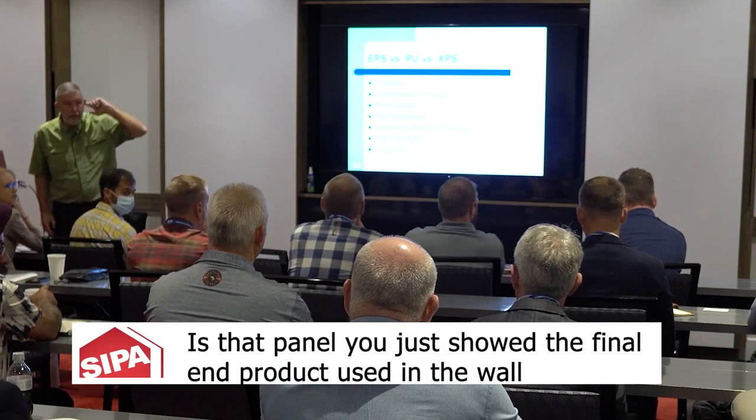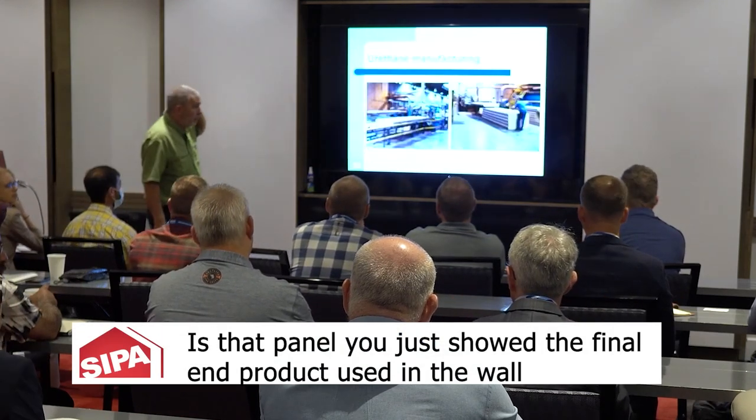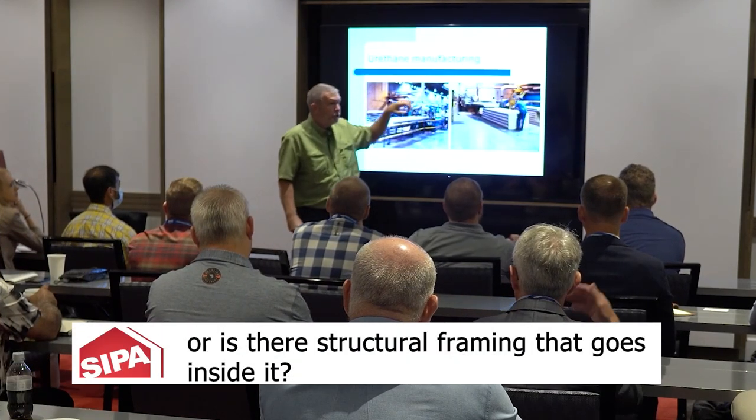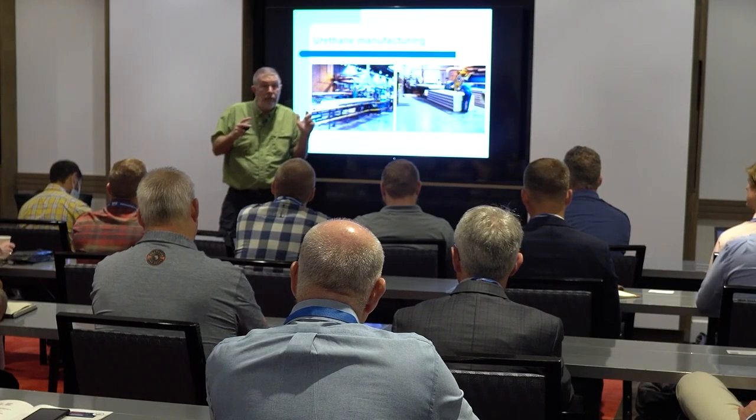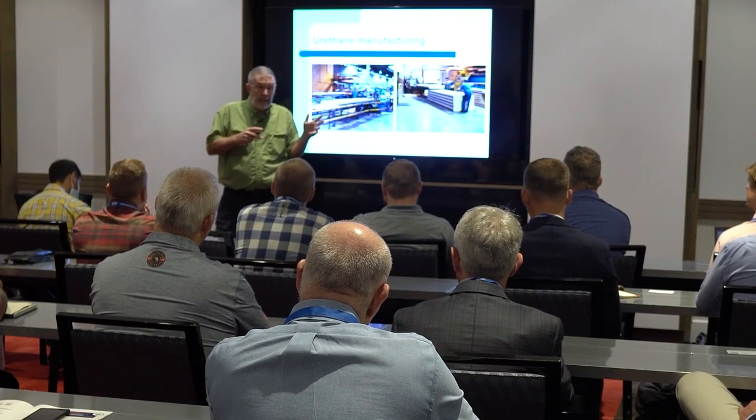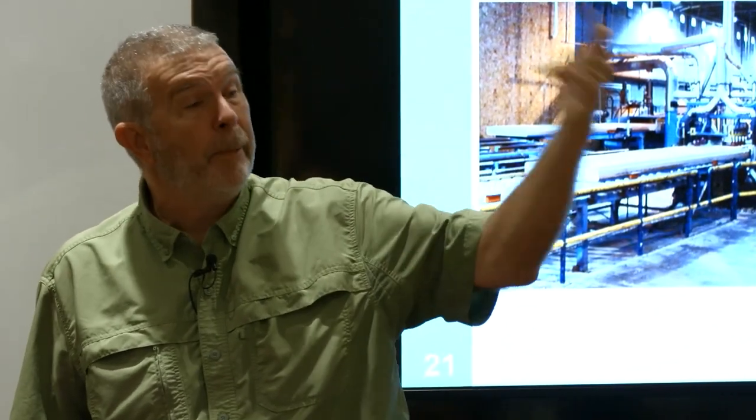Question: Is the panel shown the end product used in the wall, or does structural framing go with it? It's the finished product — what we'd call a blank panel. What do we do with a blank panel? Typically it gets fabricated to meet a design, then put in the field and installed. That fabrication may include window and doorway openings, rake angles, compound cuts, and lumber included around the perimeter of the panel or around door and window openings.